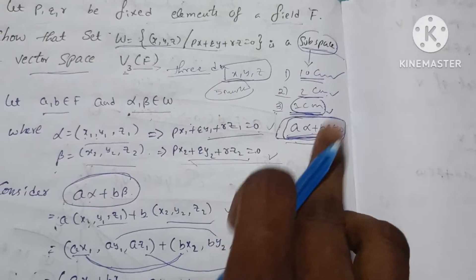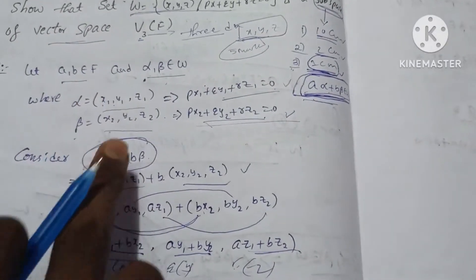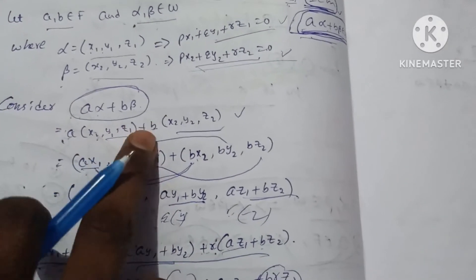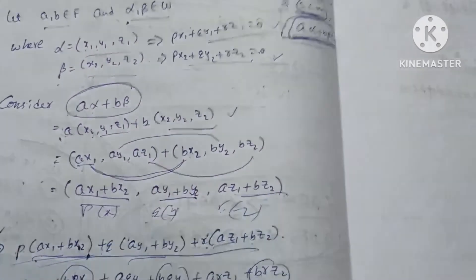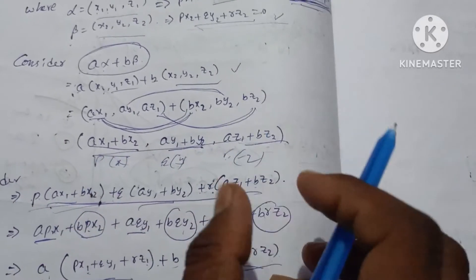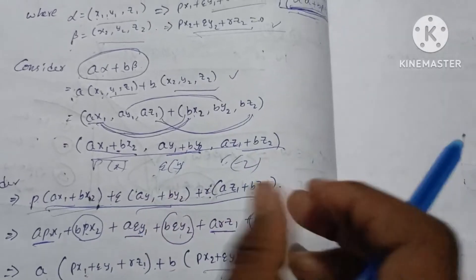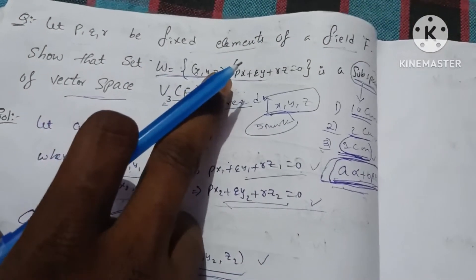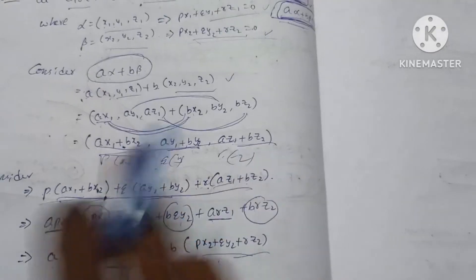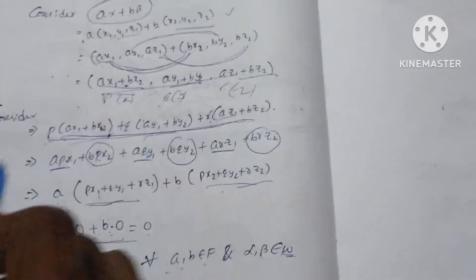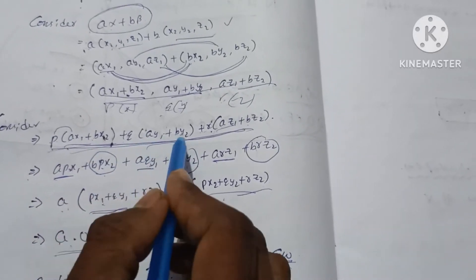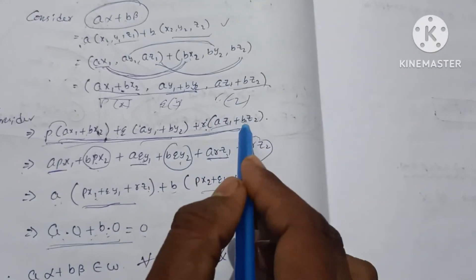Let a, b from field, so alpha equals W elements xyz (x1, y1, z1) from the equation. Beta also from W gives (x2, y2, z2). Consider a alpha plus b beta: a into alpha plus b into beta, multiply to get (ax1, ay1, az1) and (bx2, by2, bz2), which gives (ax1+bx2, ay1+by2, az1+bz2).